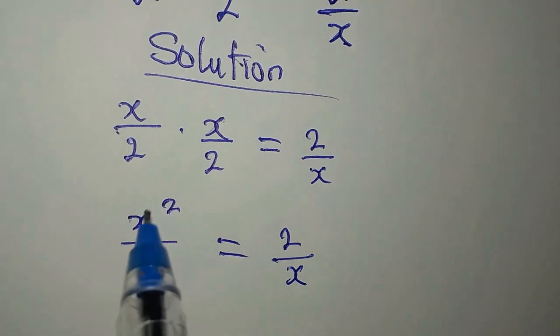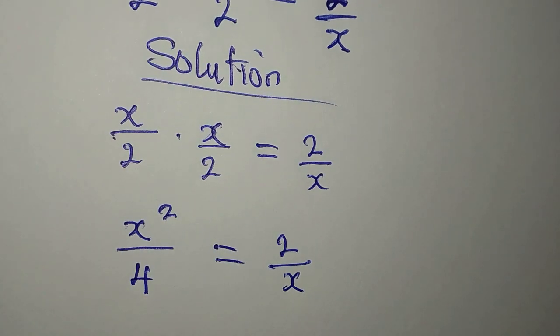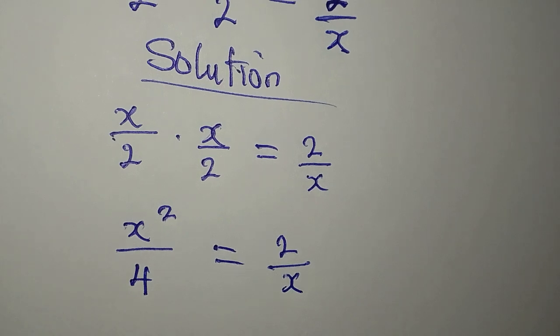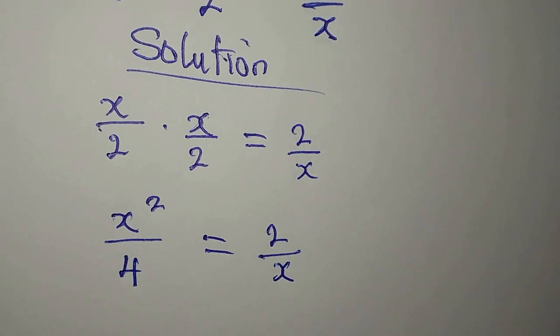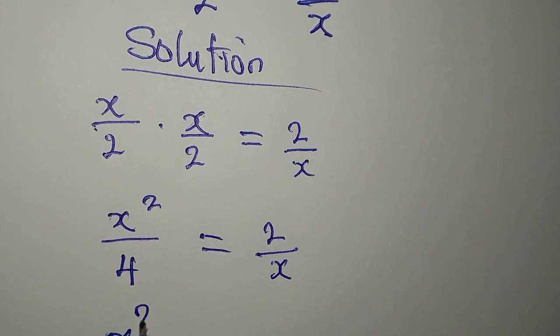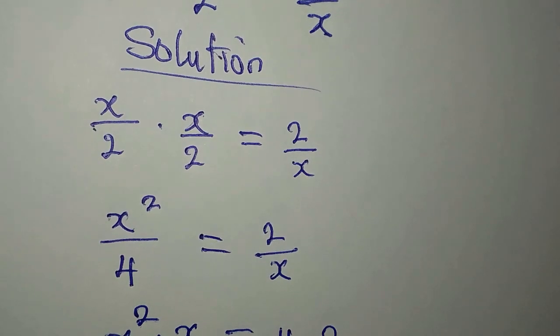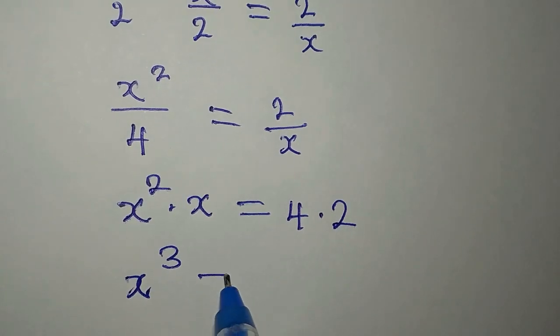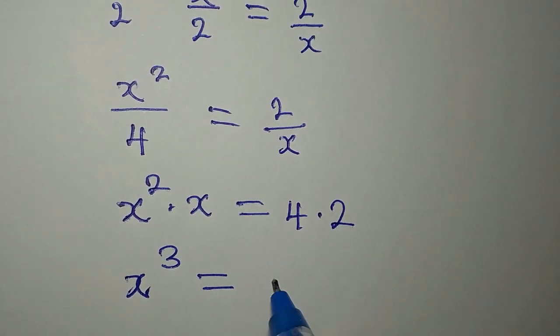When you have two fractions, one on the left, the other on the right, you cross multiply. So we have x to the power of 2 times x equals 4 times 2. Now, x to the power of 2 times x is x to the power of 3, and that equals 8.